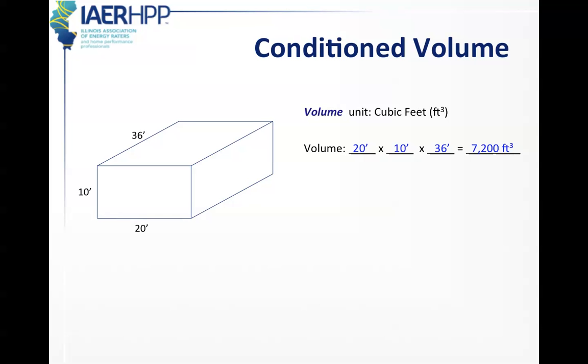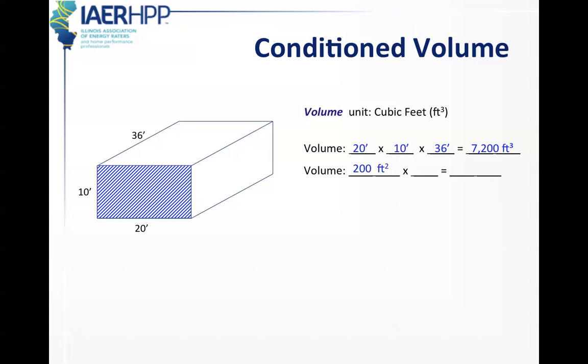Now, in order to get volume, you can also take the area of a wall and go depth-wise. It's width times height times length, or it doesn't matter what order you go in. It could be 20 times 10 times 36, or 36 times 10 times 20. It will give you the same answer no matter what, 7,200 square feet. Instead, let's take the area of this front wall, which is 10 times 20, which is 200 square feet. We multiply that by the length of the room, which is 36, and we would get 7,200 square feet.